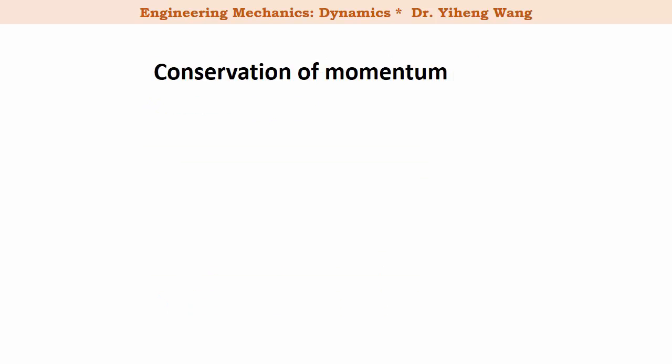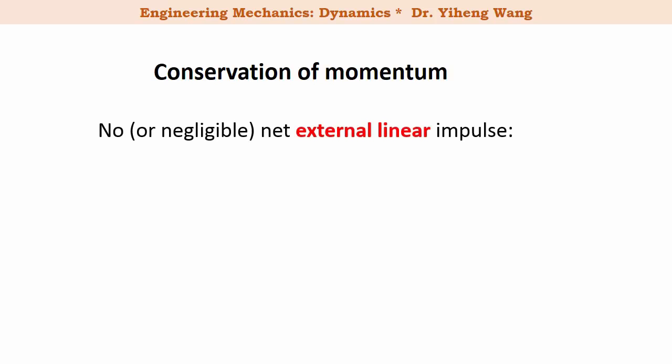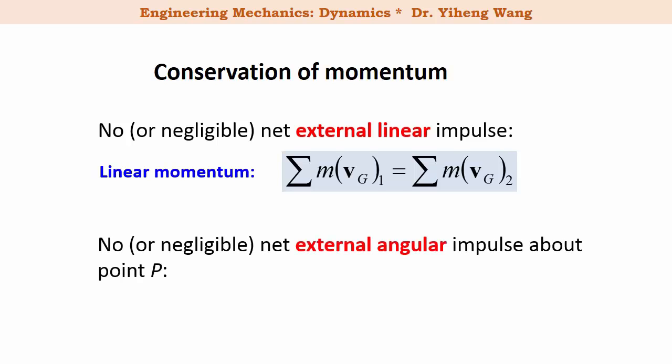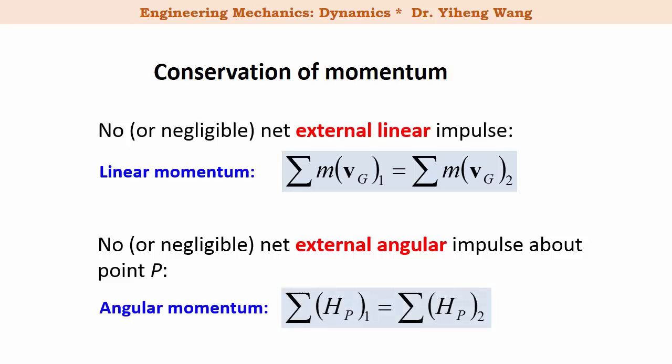Just like in particle kinetics, if there is no or negligible net external linear impulse, then linear momentum is conserved for the system. If there is no or negligible net external angular impulse about a certain point P, then angular momentum is conserved about that point P. Conservations of momentum can be applied to a single rigid body or a system of bodies.